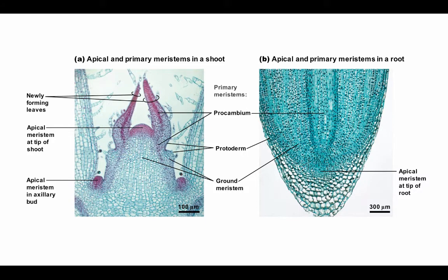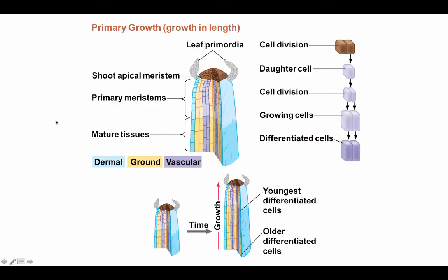Here we have images of an apical meristem in a shoot and in a root. The pink region is where cells are actively dividing. Here's an apical meristem in an axillary bud next to a leaf. The apical meristem in shoots is protected by leaf primordia — newly developing leaves surrounding this delicate, actively dividing tissue. In the center of both the leaf primordium and the growing root, we can see the procambium, which gives rise to the vascular system. The protoderm forms the outermost cell layer, giving rise to the dermal system, while the ground meristem in the middle gives rise to ground tissue.